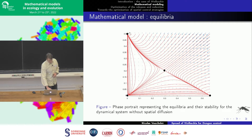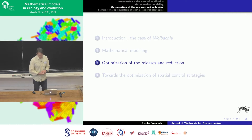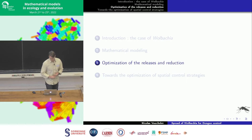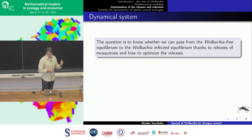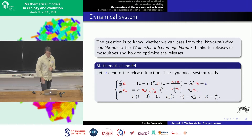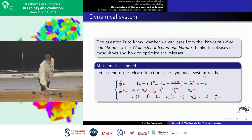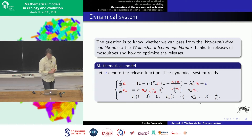I want to address how to optimize the release in time. We take the same system but add a release function u in the equation for infected mosquitoes. We start at the Wolbachia-free equilibrium (N_i = 0) and try to find the function u such that we can pass as efficiently as possible to the Wolbachia invasion equilibrium. We minimize the L2 distance between the state at final time and the invasion equilibrium — that is, we want N_u close to zero and N_i close to the invasion equilibrium value.